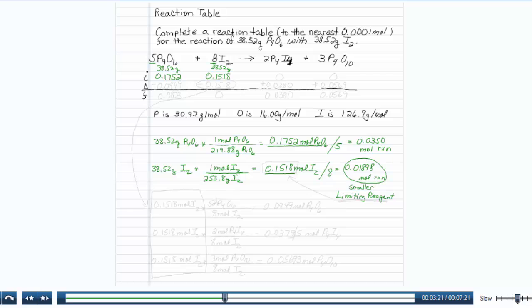And my moles of I2 and write them in, and initially my moles of product are 0. I don't have any yet. The idea of the limiting reagent is that I use all of it. So I'm going to subtract 0.1518 moles of I2 and have nothing left.